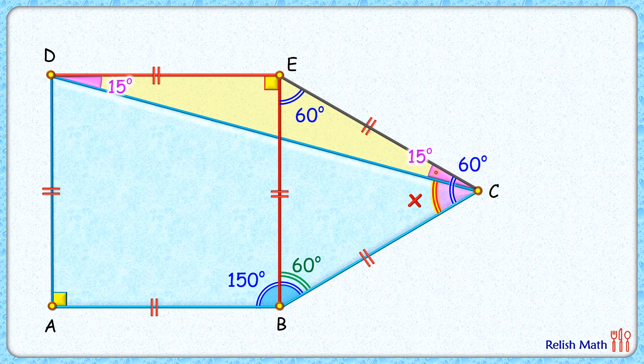Now this angle C, the complete angle, is 60 degrees, made up of angle x and 15 degrees. And thus, value of x is 60 minus 15, or 45 degrees. And that's our answer.